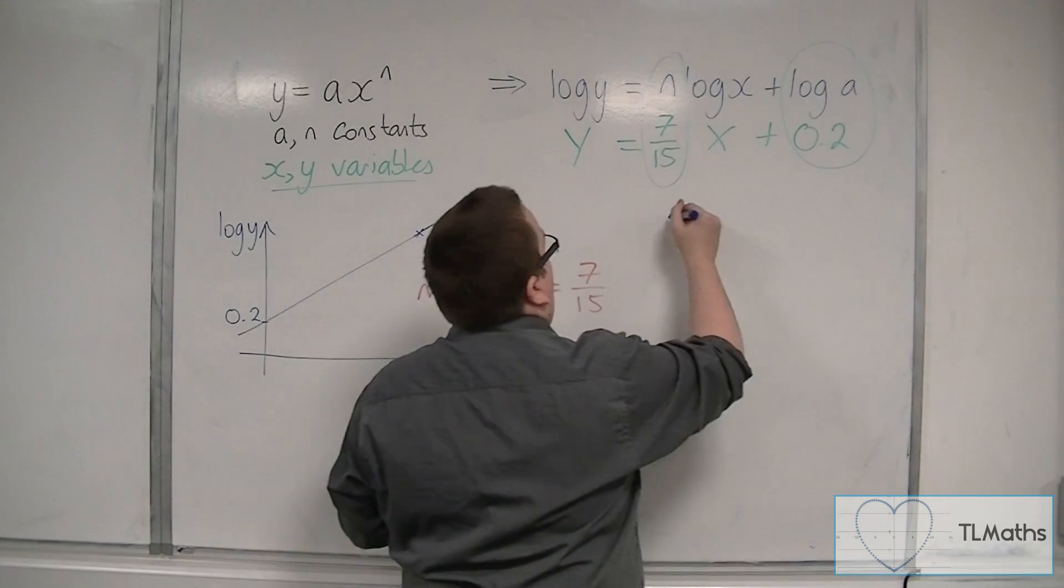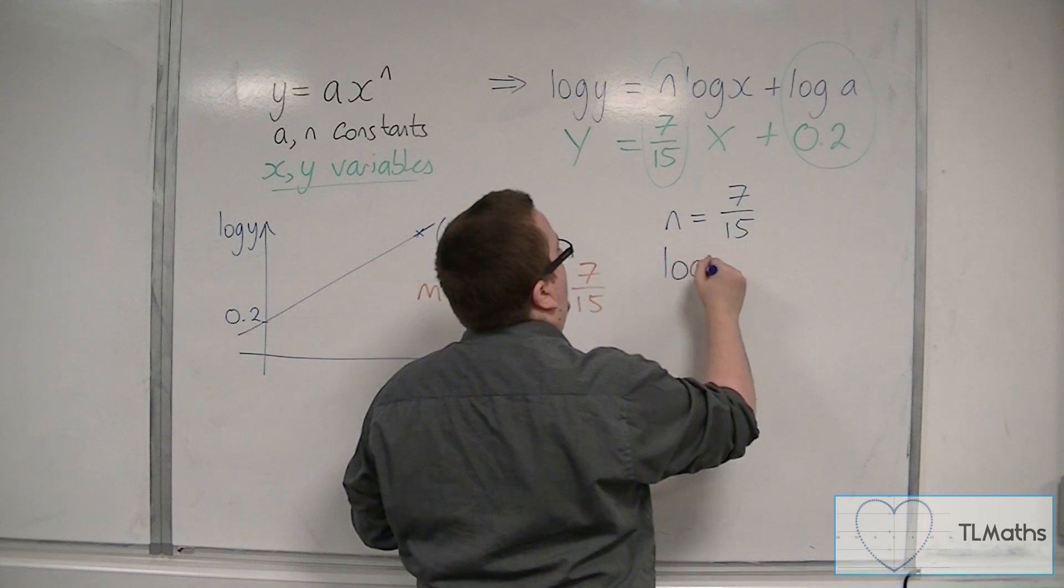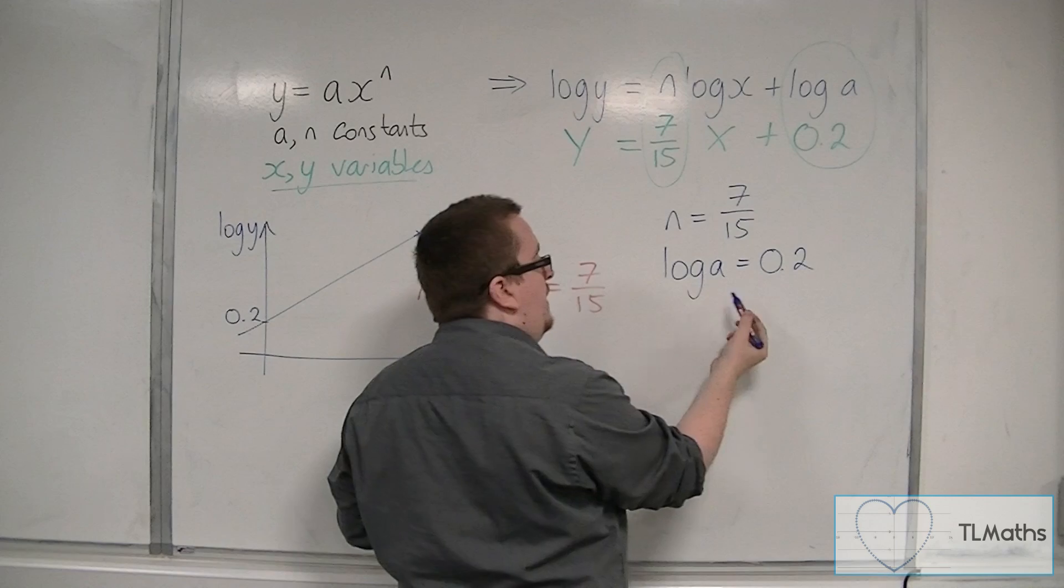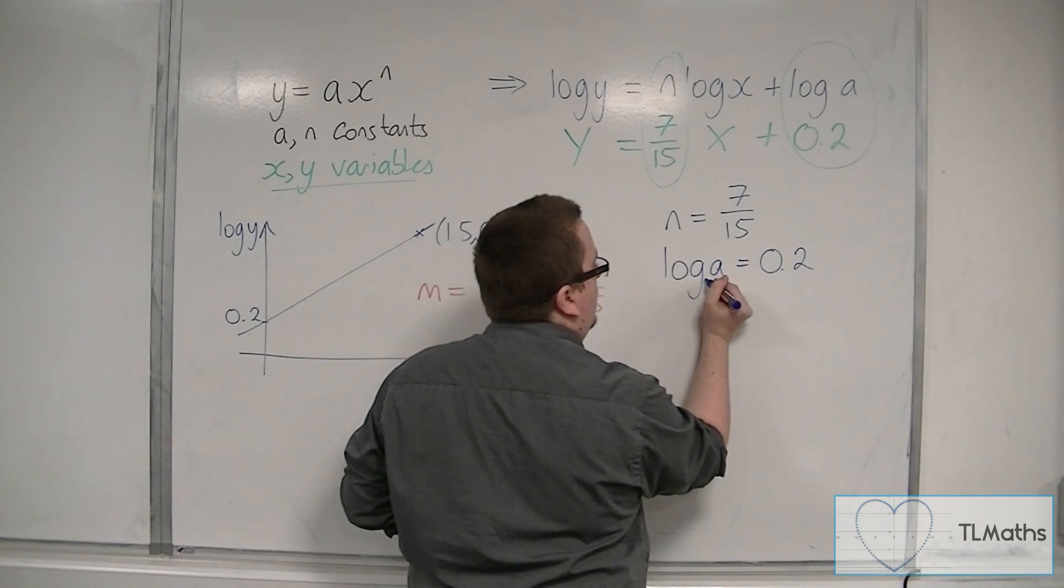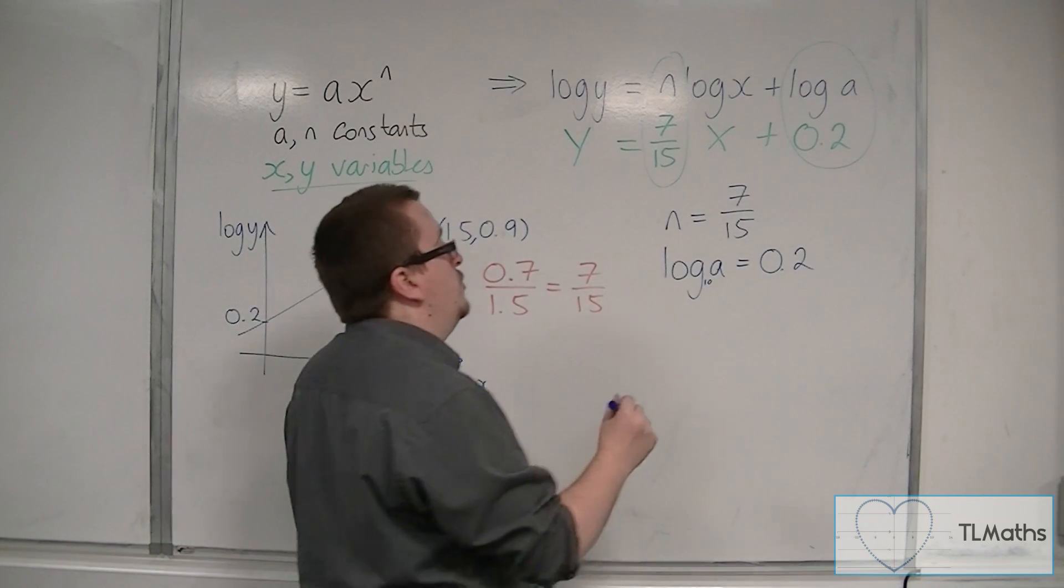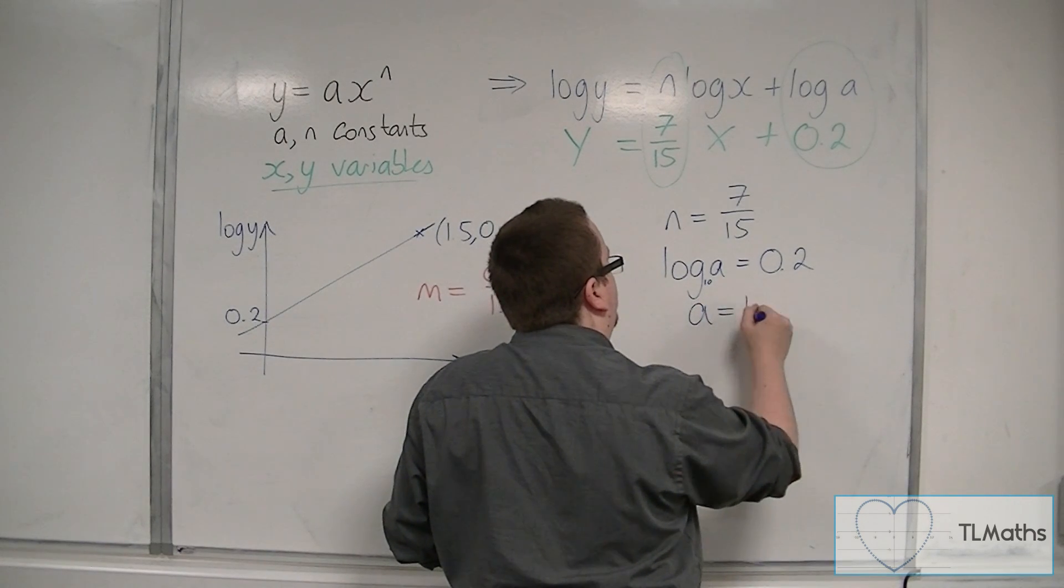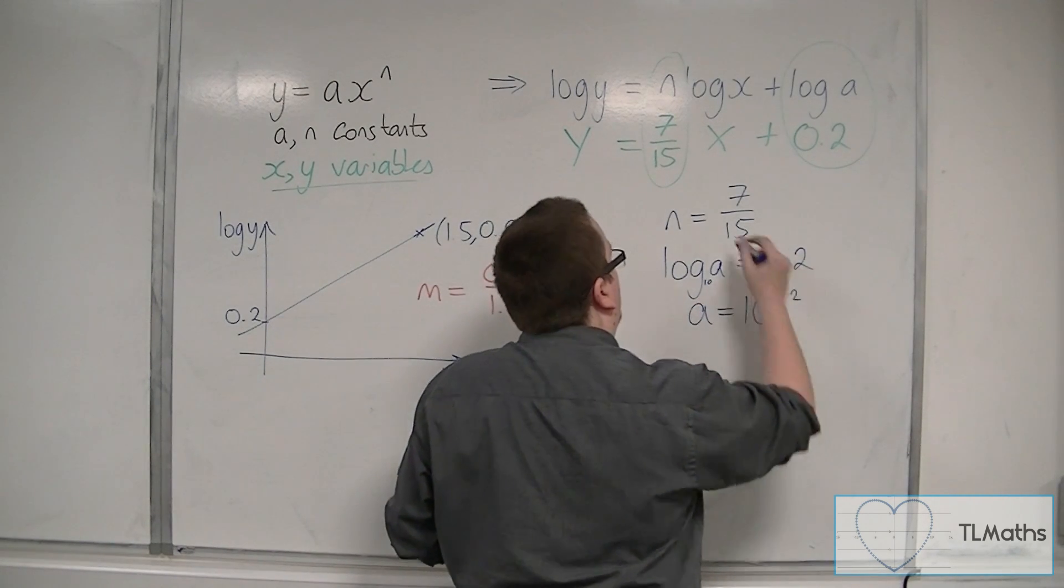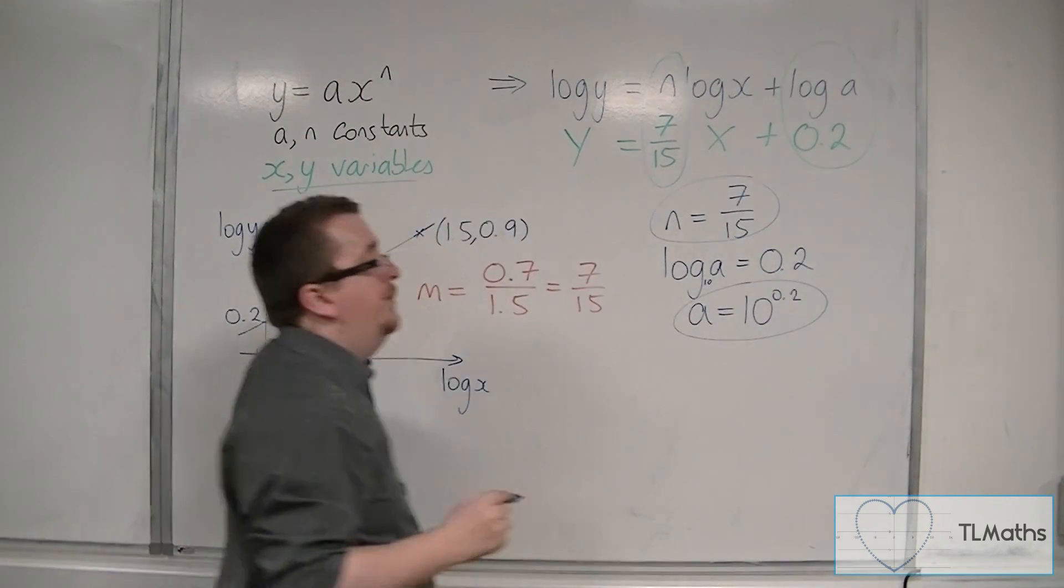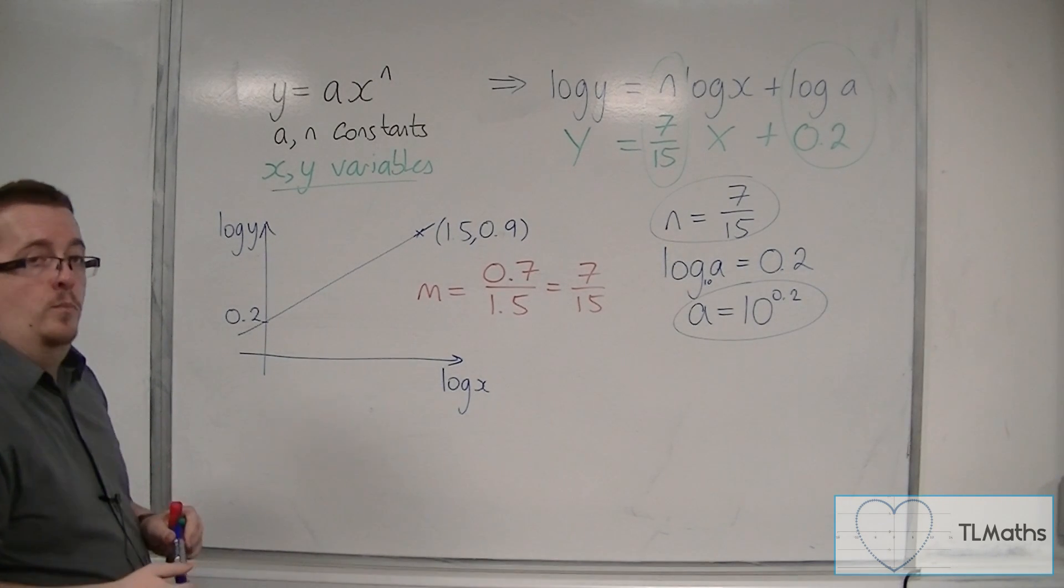So, if n is 7 over 15, and log a is equal to 0.2, well, remember this is a logarithmic equation, that's base 10, and I can convert it into an exponential equation, where we can write 10 to the 0.2 is equal to a. So, these are the values that I was looking for. n is 7 fifteenths, and a is 10 to the 0.2.